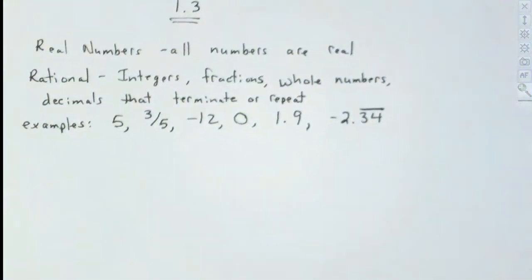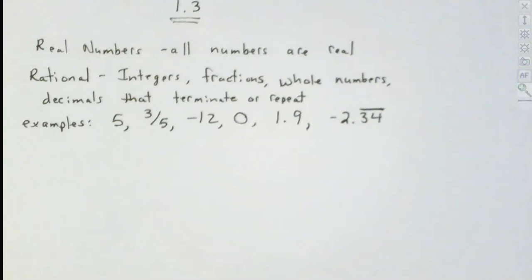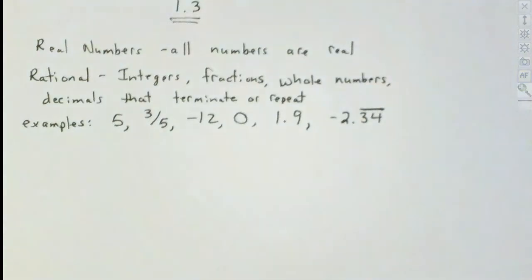So when we talk about numbers, all numbers we're going to be working with are real — everything we work with is classified as a real number, we can add it or subtract it. Below that we have rational, and we're also going to talk about the irrational numbers. If we were a biologist, it might be we're looking at mammals and amphibians — two different types. Same thing here: we've got rational and we've got irrational.